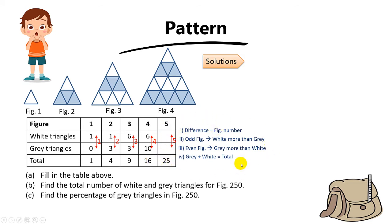With all these patterns in mind, how do we find the white and grey triangles? Since we know the white is more than the grey by 5, to find the grey triangles, take the total triangles minus 5, then divide by 2. So 25 minus 5 is 20, and 20 divided by 2 gives you 10. Then to find the white triangles, take 10 plus 5 to get 15. That's how we find the white and grey triangles.